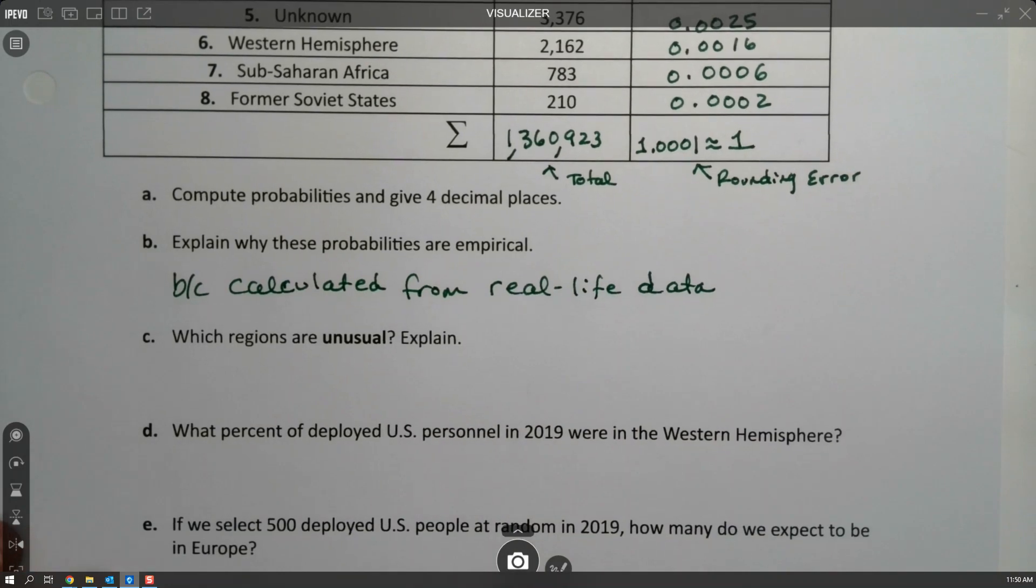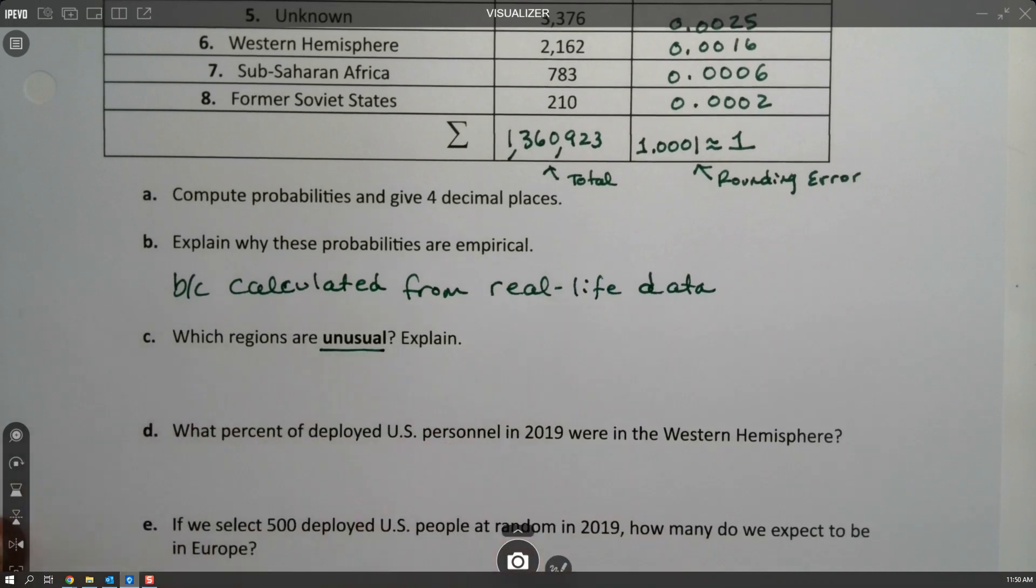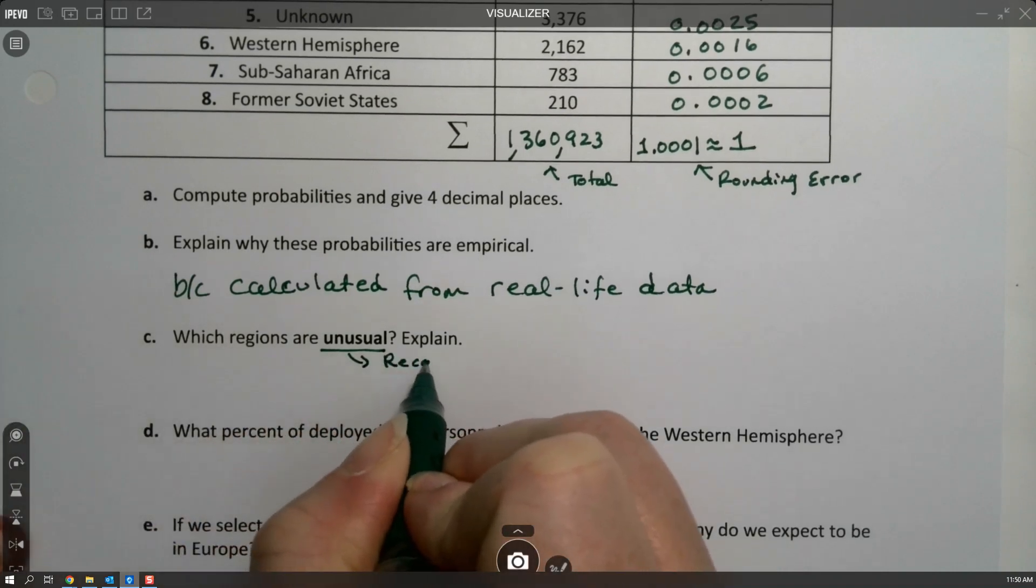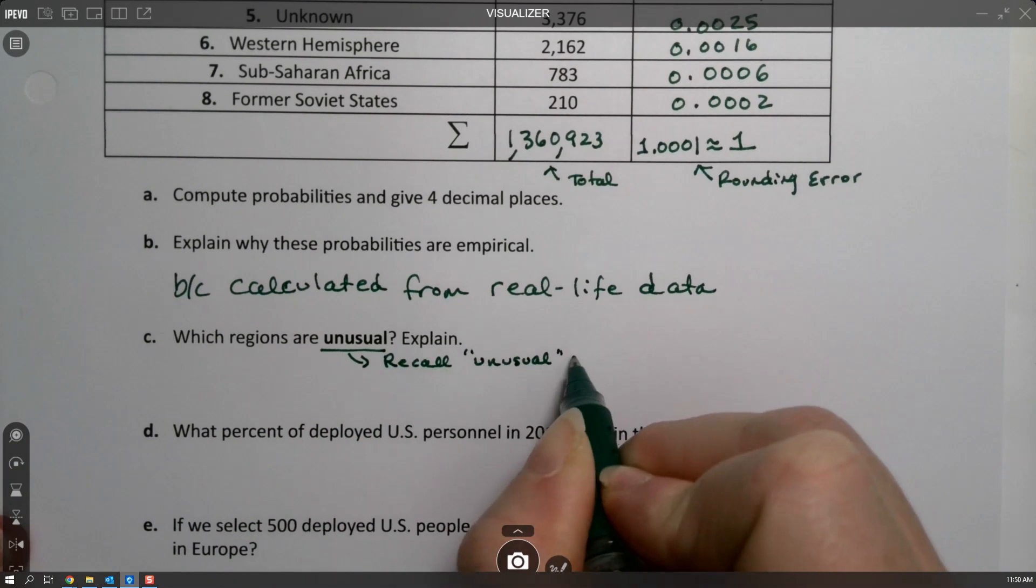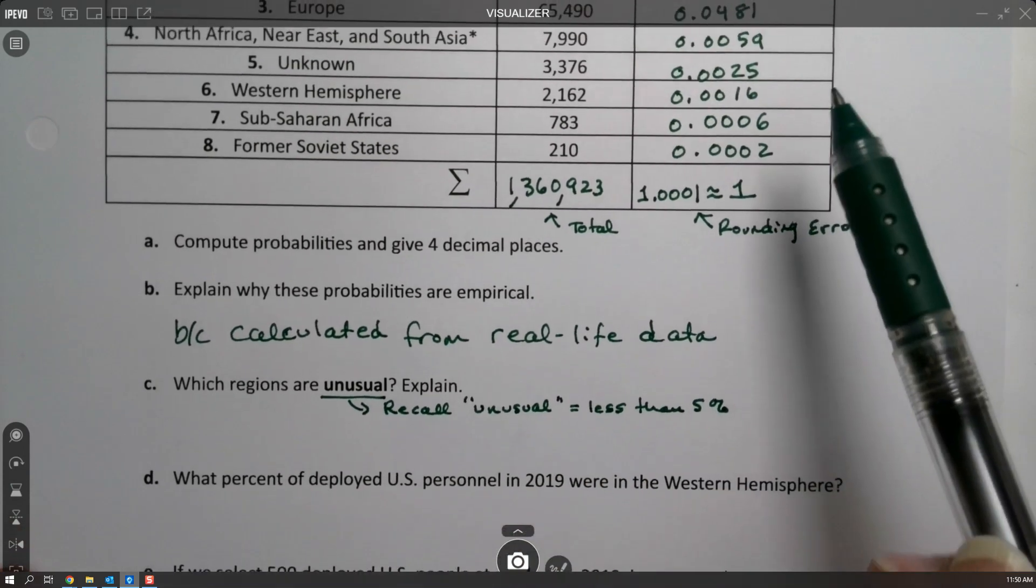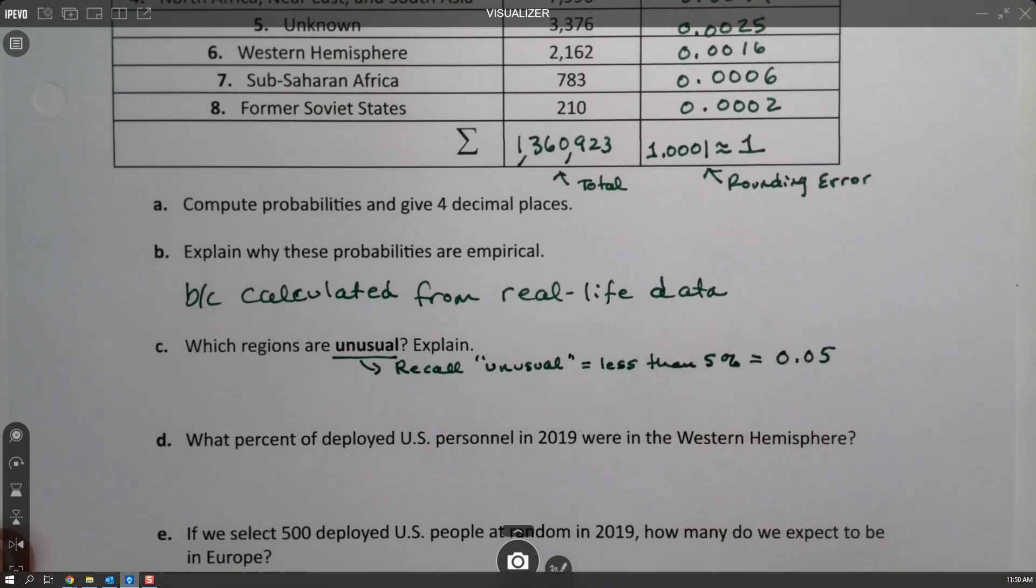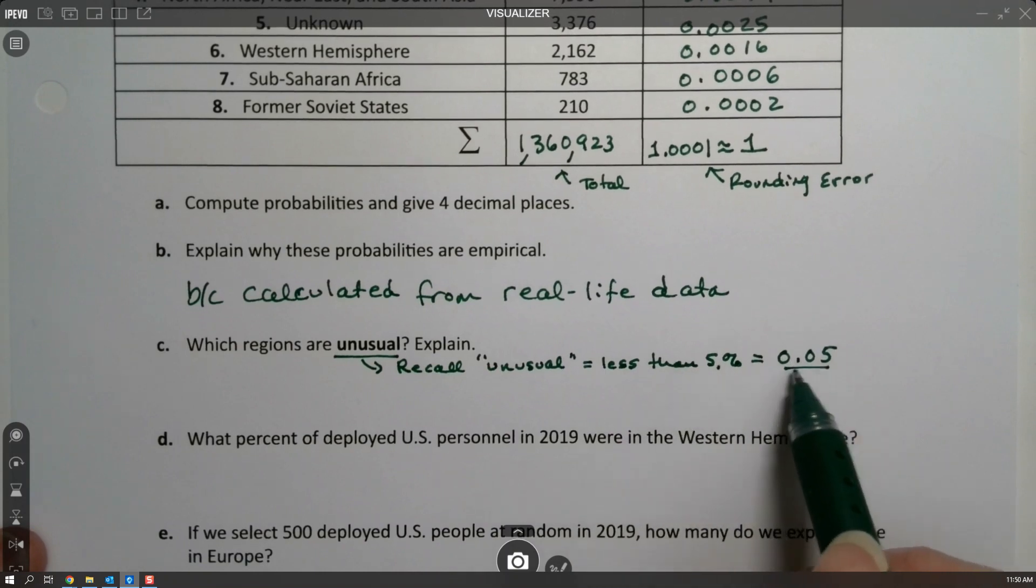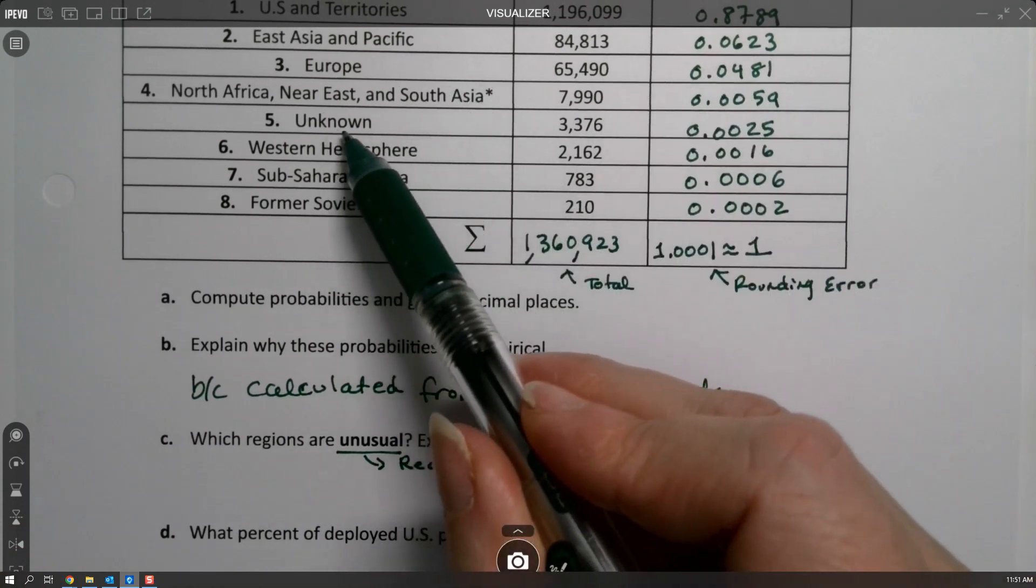Which of the regions are unusual? Remember that unusual is defined for us in chapter 3 as being less than 5%. So I'm going to make a little note - recall unusual is less than five percent. The regions that are unusual are all the ones that are less than 0.05. 5% is 0.05 because you move the decimal two spots over.